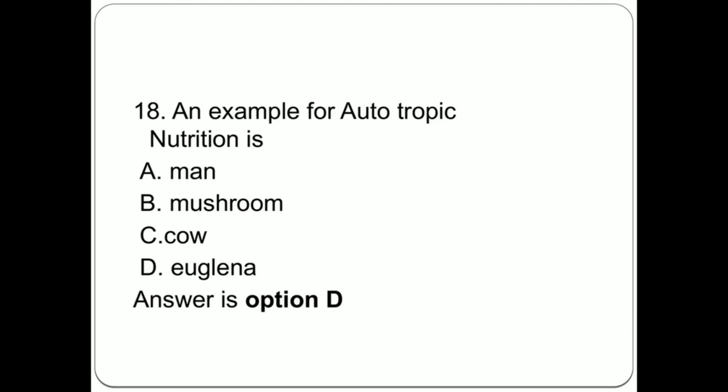Question 18: An example for autotropic nutrition is: A. Man, B. Mushroom, C. Cow, D. Euglena. Answer is option D, Euglena.